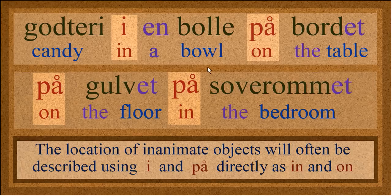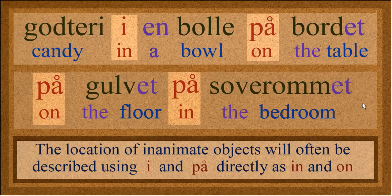Candy in a bowl on the table — it matches up. But then you see a sentence like this: på gulvet, på soverommet — on the floor, in the bedroom. The reason it's på is because of soverom. Soverom uses på, and other rooms in the house will use i. I'll show you that later in this video. It's actually easier than you think to remember, because if you think about the articles for nouns, you can remember them — you remember the prepositions used with nouns the same way.